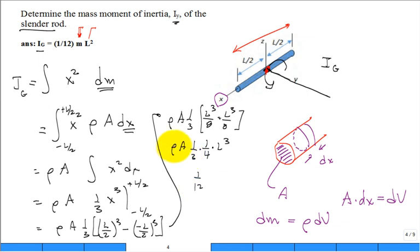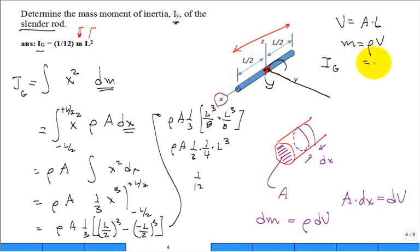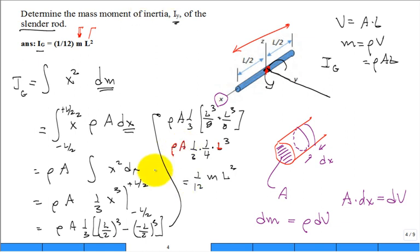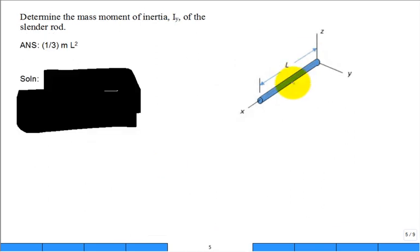Now think about it — rho A L. The total volume is A times L, and the total mass is rho times volume, or rho A L. So we have one twelfth times the mass times L squared. One of those L's joins with A and rho to make the mass. And there's our answer: one twelfth mass length squared. So we know that about point G, I sub G is equal to (1/12) M L squared.